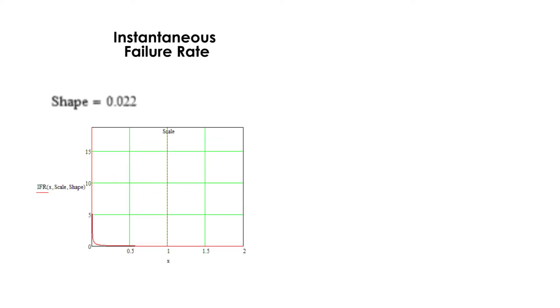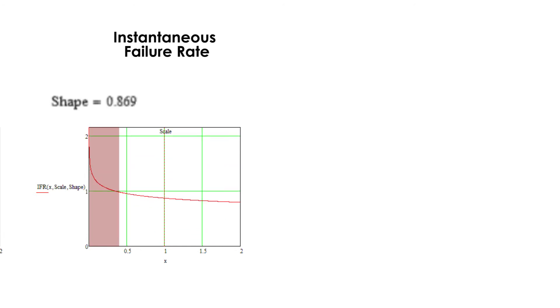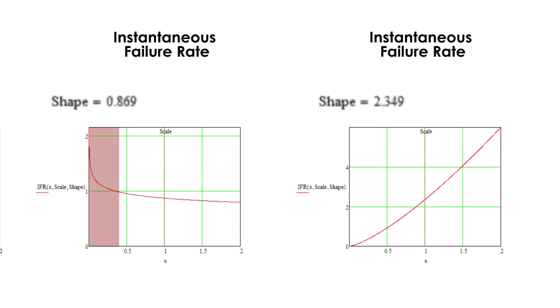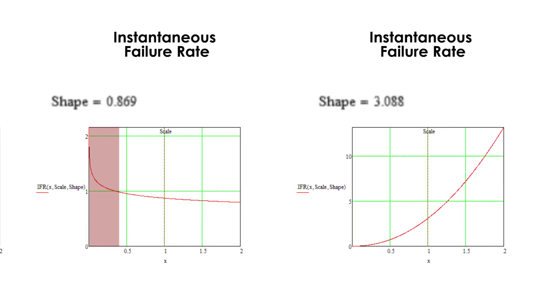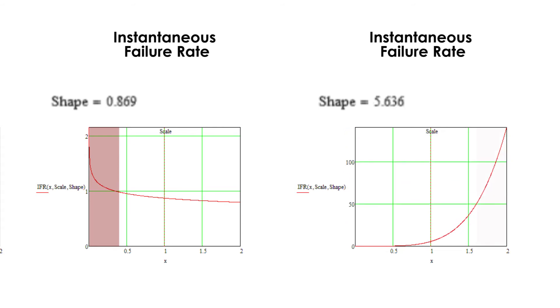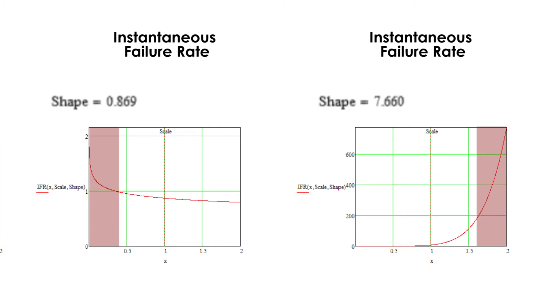If we have, for example, good reasons to believe that the components will mostly suffer from early failures, the Weibull shape will be low, at most 1. On the other hand, if we know that the failures will likely occur due to material fatigue, the shape will mostly be more than 2, as there is some service time needed before the failures can actually demonstrate themselves.